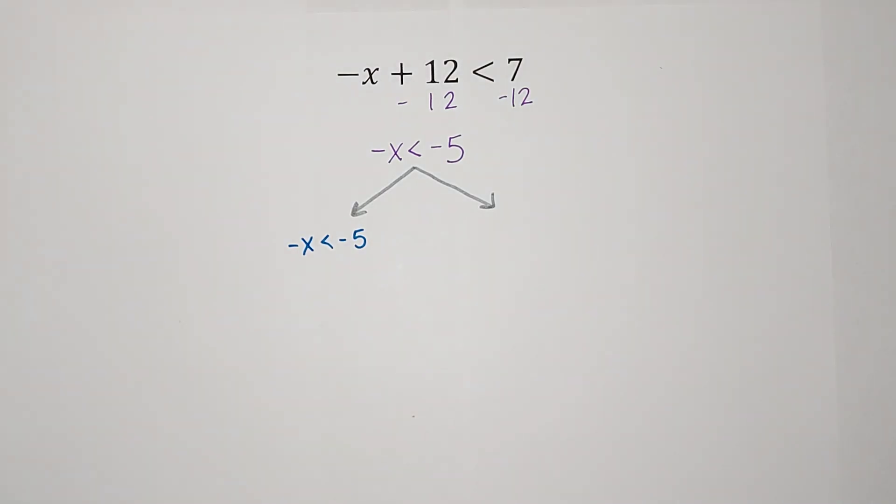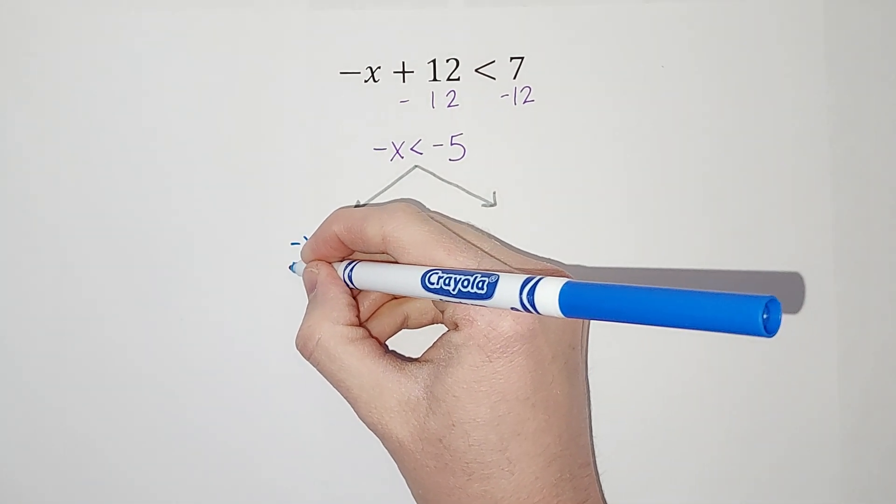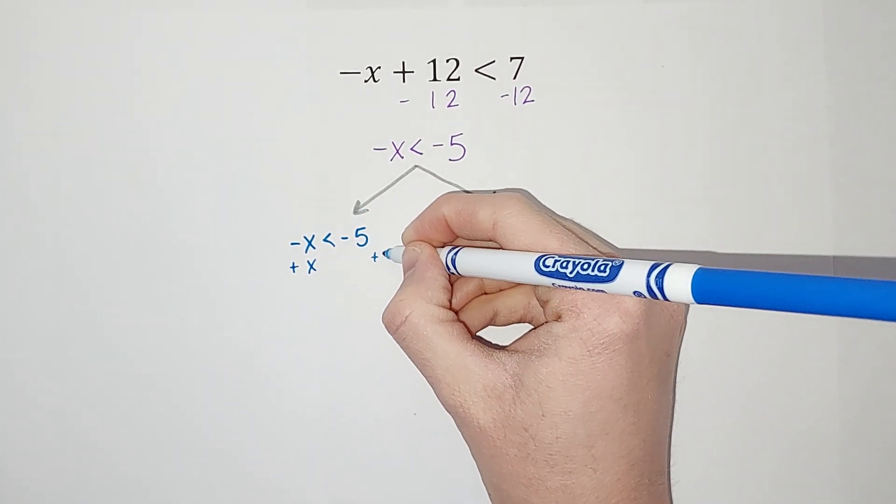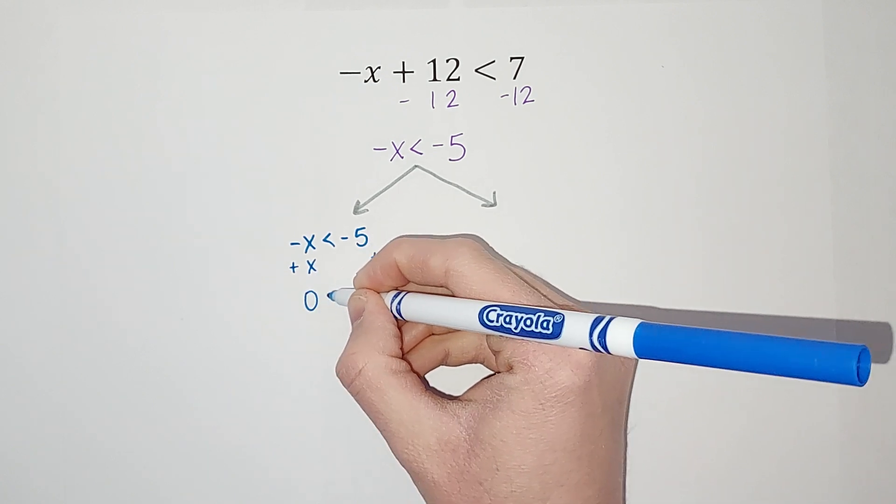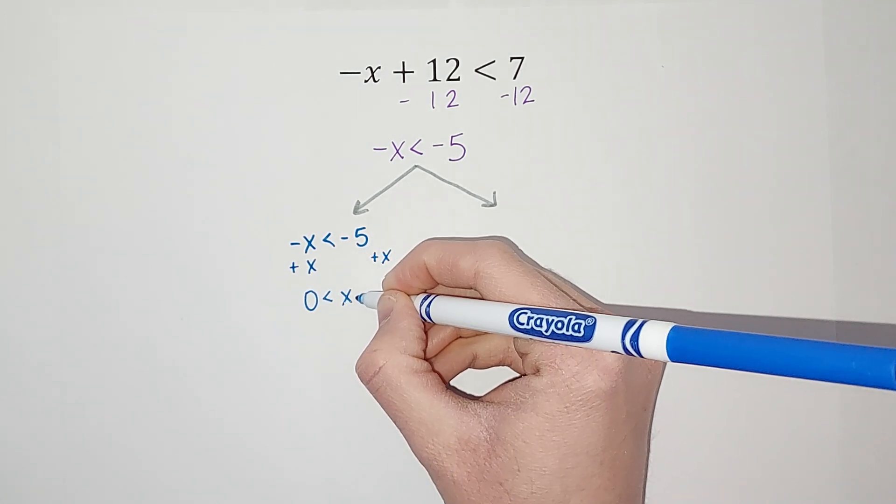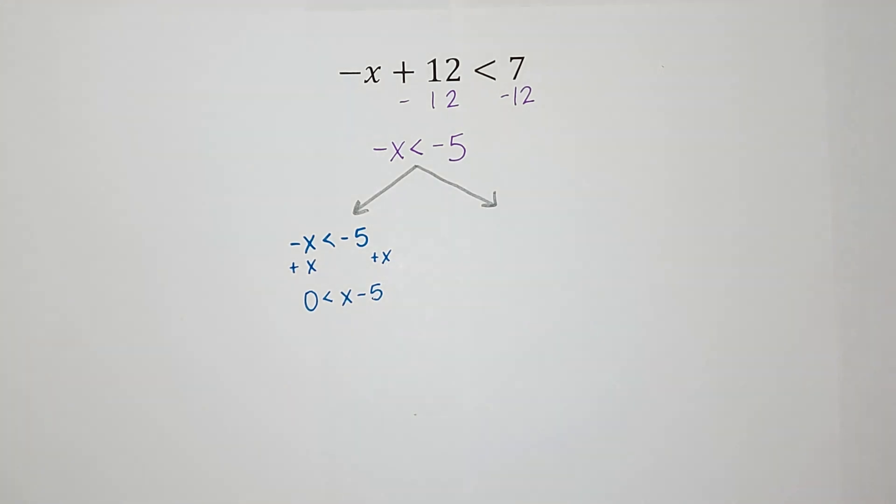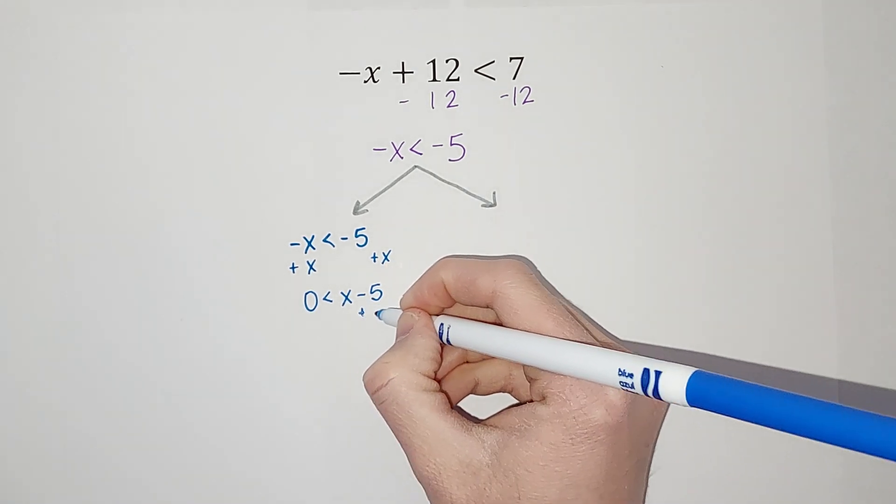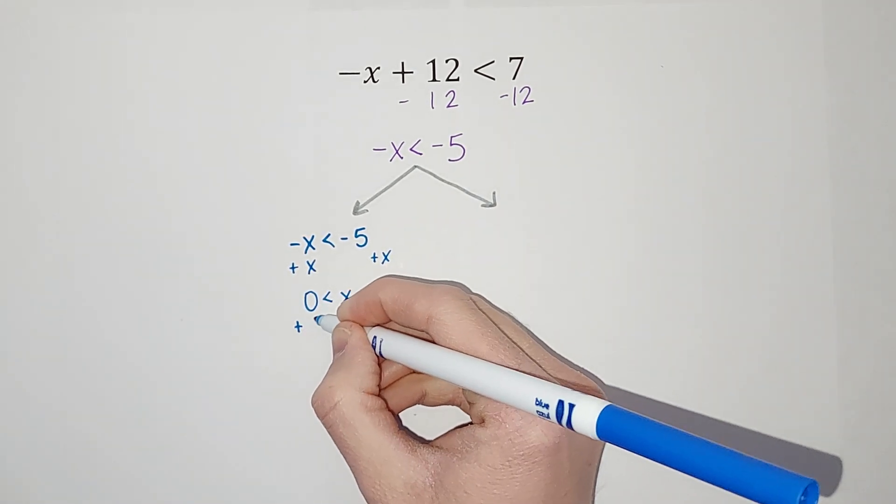One way to get x to be positive would be to add x to both sides. Right? That'll get it positive. So then I'm left with zero is less than x minus 5. But we want x alone, right? So I'm going to add 5 to both sides.